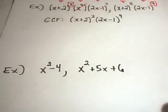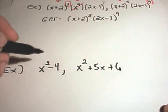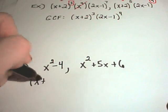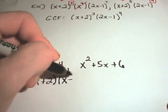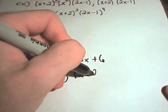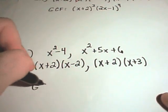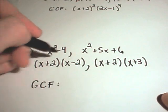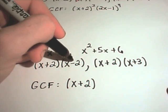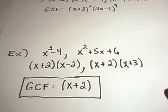Let's do one more. We have x²-4 and x²+5x+6. On these problems the expressions aren't already factored, so we factor them first. x²-4 factors as (x+2)(x-2), and x²+5x+6 factors as (x+2)(x+3). Now I'm back to the same game — I see (x+2) in both, so I factor that out. There's an (x-2) in the first but not the second, so the greatest common factor is simply x+2.